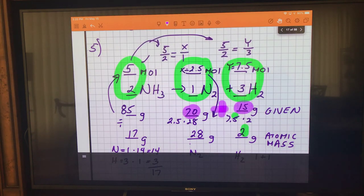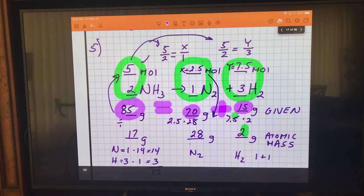So notice now that when we're all done, if I take the 70 and the 15 and I add those two together, it equals what I started with, 85. It has to because conservation of mass says I can't create or destroy matter.